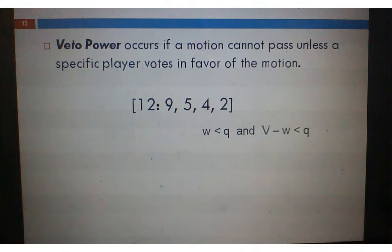Veto power occurs if a motion cannot pass unless a specific player votes in favor of the motion. So, somebody who's critical to get that motion to pass. Player 1 has weight of 9 votes. So, the 9, it's less than the quota.